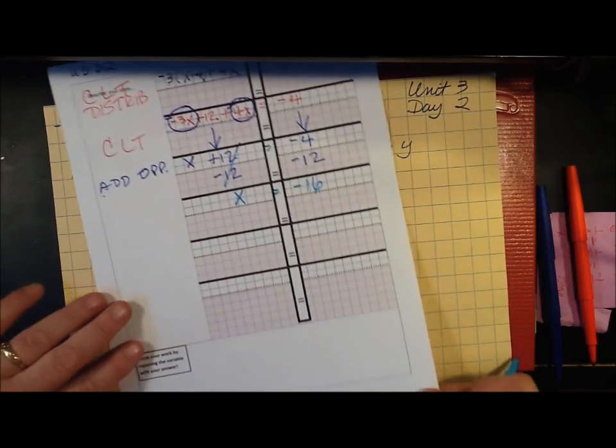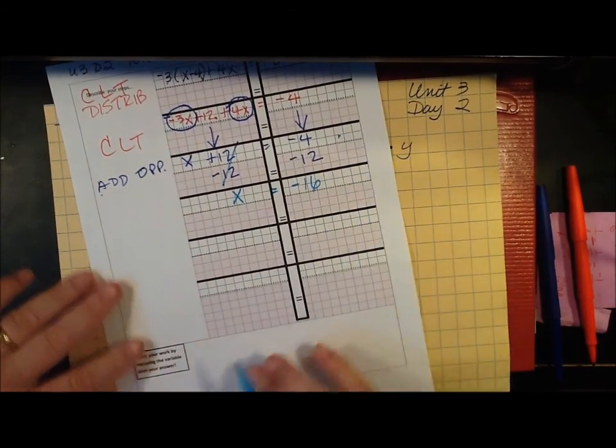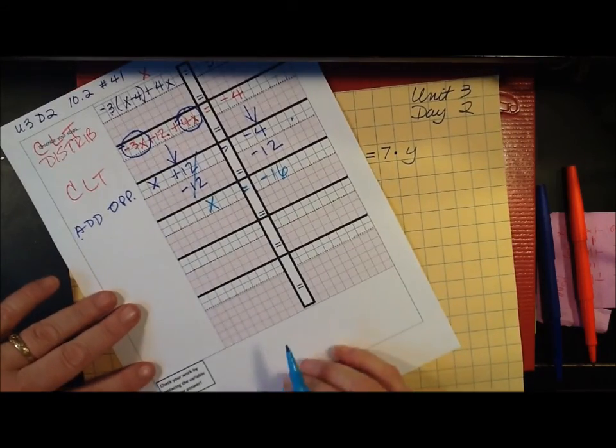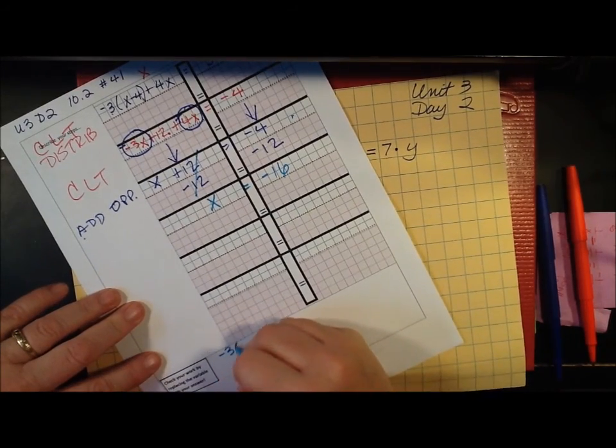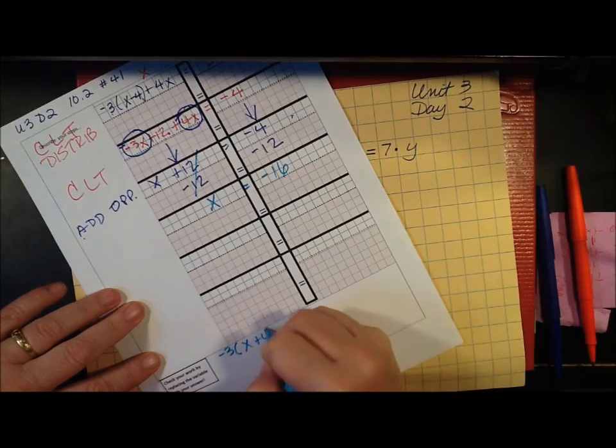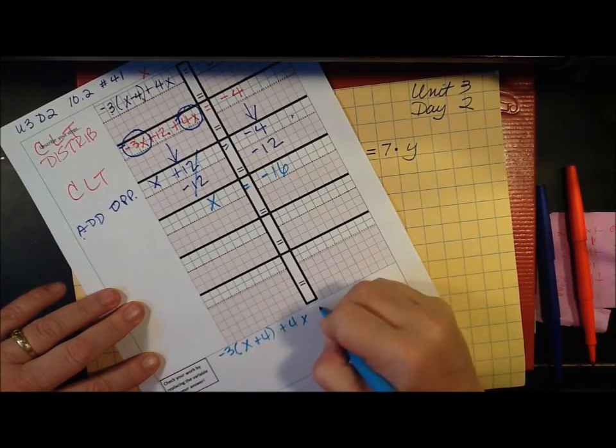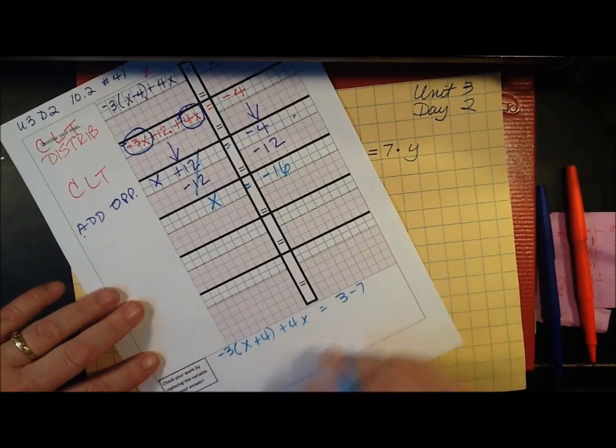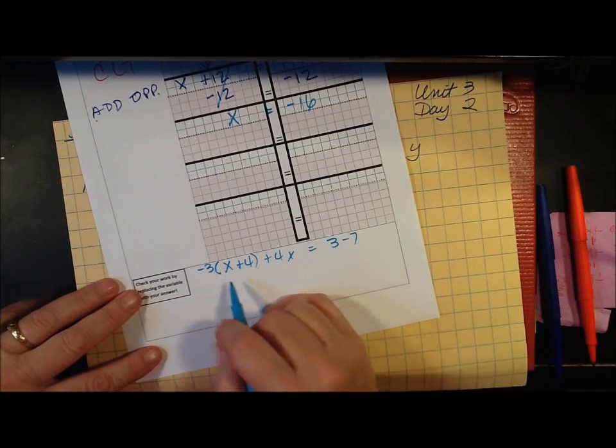So let's take it back to here and see if it works. Let's take it back to the very beginning. Negative 3 times x plus 4 plus 4x equals 3 minus 7. I know I'm talking really fast but I'm also working.